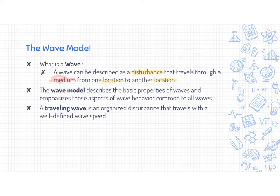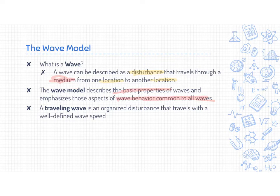The wave model is what we're going to be talking about today. It describes some basic properties and emphasizes the wave behavior that is common to all waves. We're going to talk a lot about sound waves in this unit, but this is really the basis — if you're getting into engineering or learning about other types of waves like electromagnetic waves, they all experience the same kind of behavior, though every wave is unique in its own way.